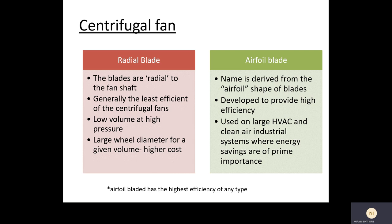For the radial blade, the blades are radial to the fan shaft and it is less efficient compared to other types of centrifugal fans. It has low volume at high pressure and a large wheel diameter for a given volume, which incurs higher cost. For the airfoil blade, the name is derived from the airfoil shape of the blades, and it is developed to provide a high efficiency fan. The airfoil blade is used in large ductwork and clean air industrial systems where energy savings is the most important specification.